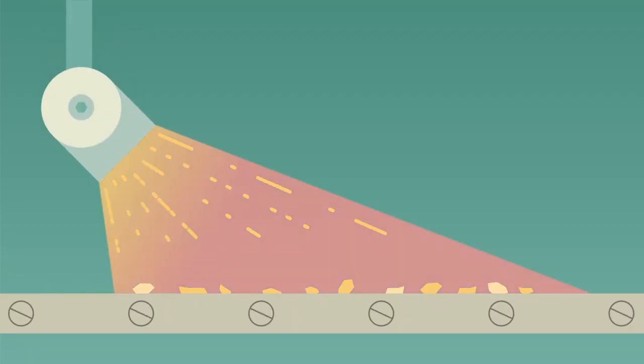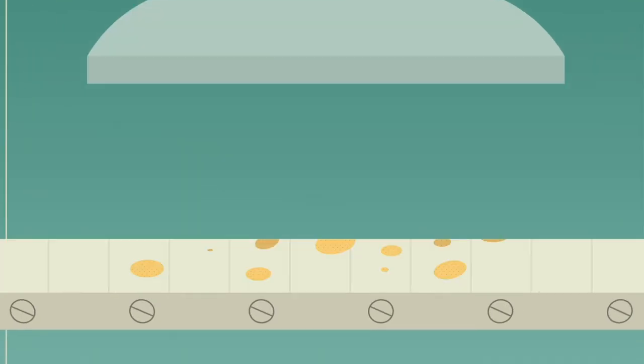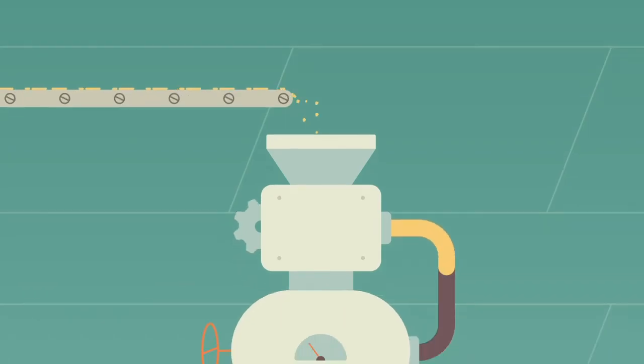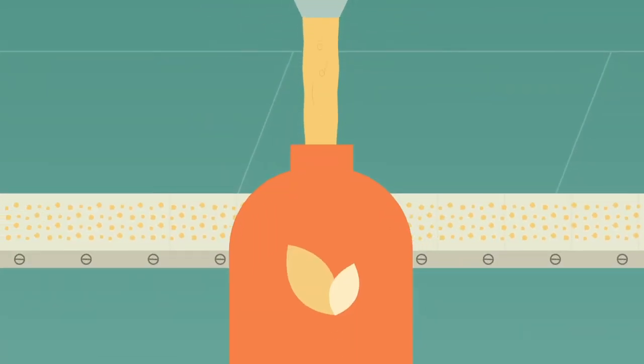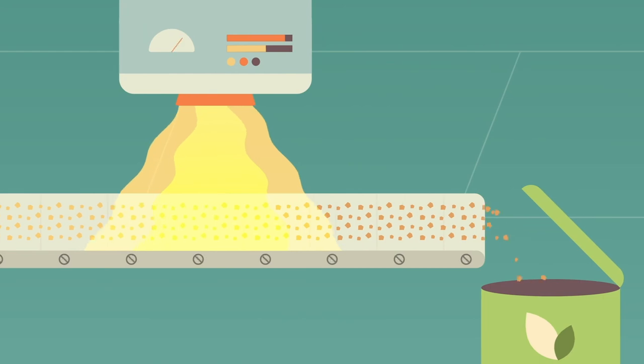This complex process cleans, cracks, and dries the seeds before being flattened into flake. Some of the flake is stripped, distilled, and refined into oil and the rest is toasted and dried to become meal.